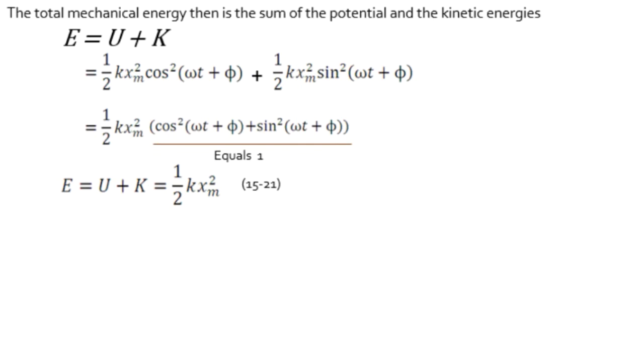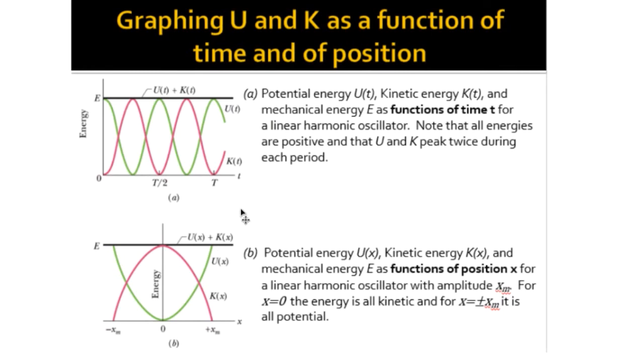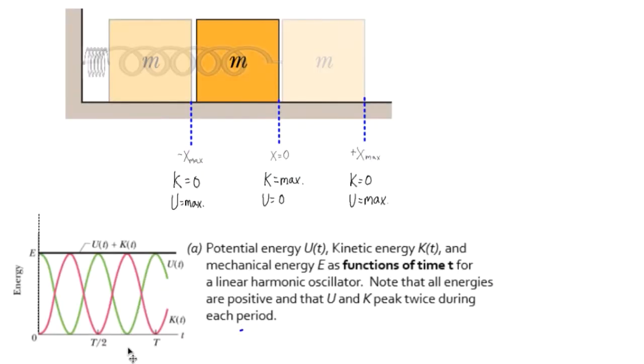Let's look at graphing the energy. Here we see two graphs, one as a function of time, and one as a function of position. Let's look at these in a little more detail. Let's start with the graph as a function of time. Here is the period, right there. T stands for period, and from time equals zero to time equals T, that is one oscillation.